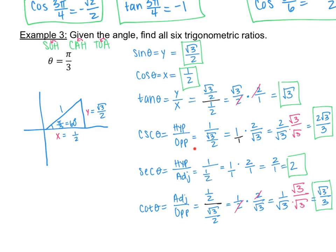To summarize: sine equals y, cosine equals x, tangent is sine over cosine or y over x. Cosecant is the reciprocal of sine — hypotenuse over opposite. Secant is the reciprocal of cosine — hypotenuse over adjacent. Cotangent is the reciprocal of tangent — adjacent over opposite, or x over y. You can use either approach and get the same result.